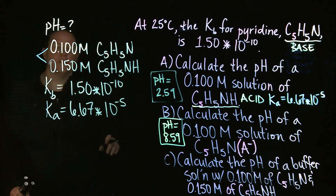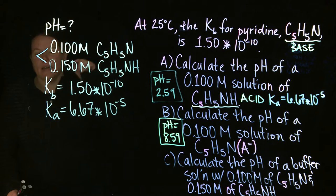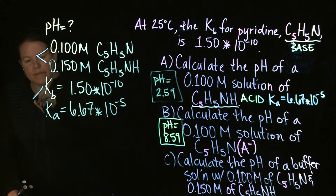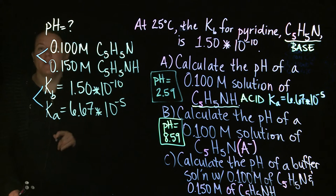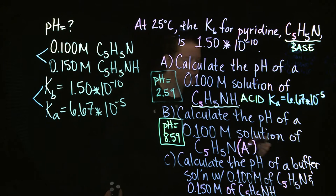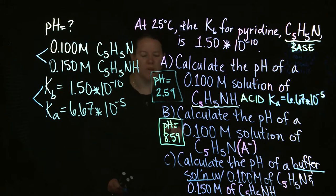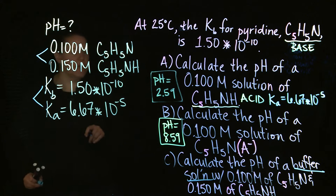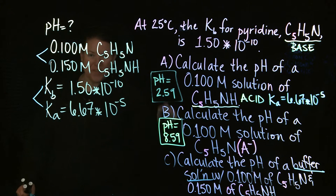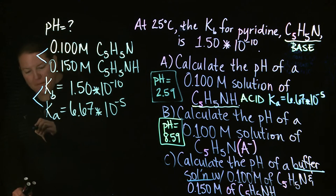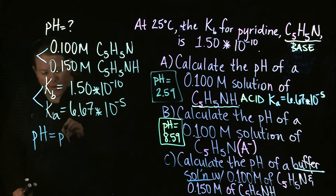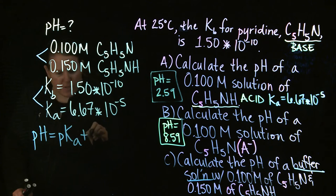When you're given an initial amount of both an acid and a base and at least 1 K, what you are going to use to find the pH, and the key phrase here that you want to be looking out for to know that you're using this equation, is the fact that it says a buffer solution. You're given an amount of the acid and the base, and you're told that it's a buffer. It's a buffer, folks. You're using the Henderson-Hasselbalch, which is awesome.